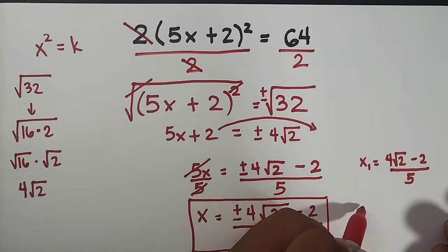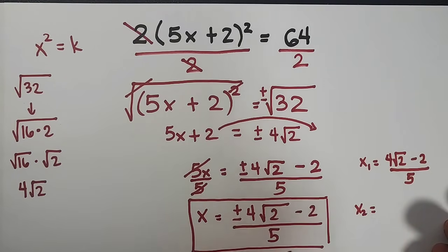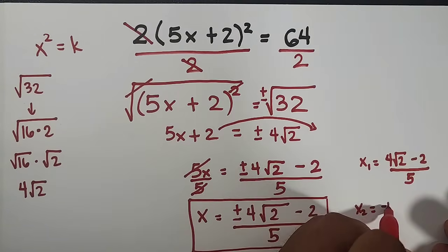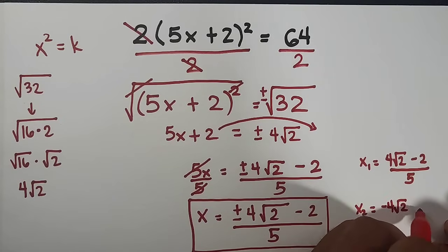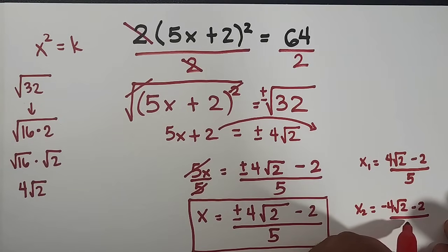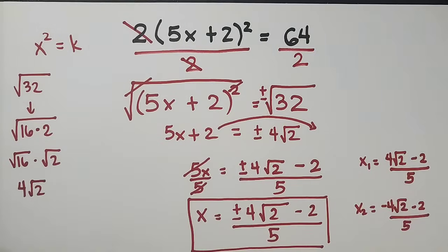Next, for the second root, x sub 2, use the negative 4, square root of 2, minus 2 over 5. And that's it guys.